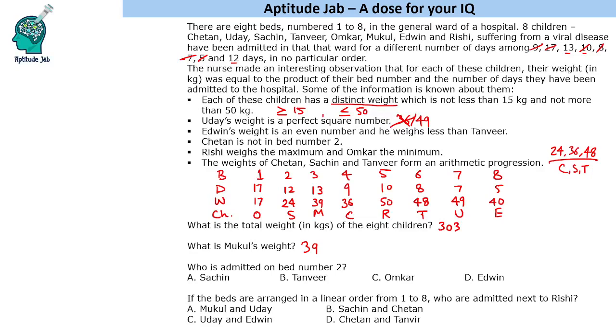So this completes the arrangement of these people finding the days and weight and now we have solved for the children as well. So now we can answer the remaining two questions also. Who is admitted on bed number 2? Bed number 2 we have Sachin. If the beds are arranged in a linear order, so let us assume that these are in linear order. Who are admitted next to Rishi? So this is Rishi. Okay, next to Rishi is Chetan and Tanvir.